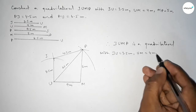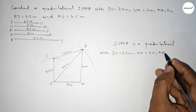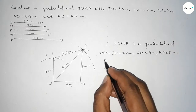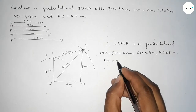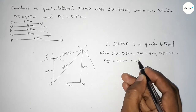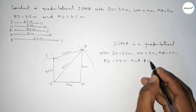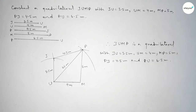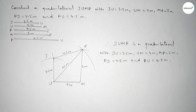Therefore, JUMP is a quadrilateral with given sides JU equal to 3.5 centimeter, UM equal to 4 centimeter, MP equal to 5 centimeter, PJ equal to 4.5 centimeter, and PU equal to 6.5 centimeter. That's all — thanks for watching. If this video is helpful to you, please share it with your friends.